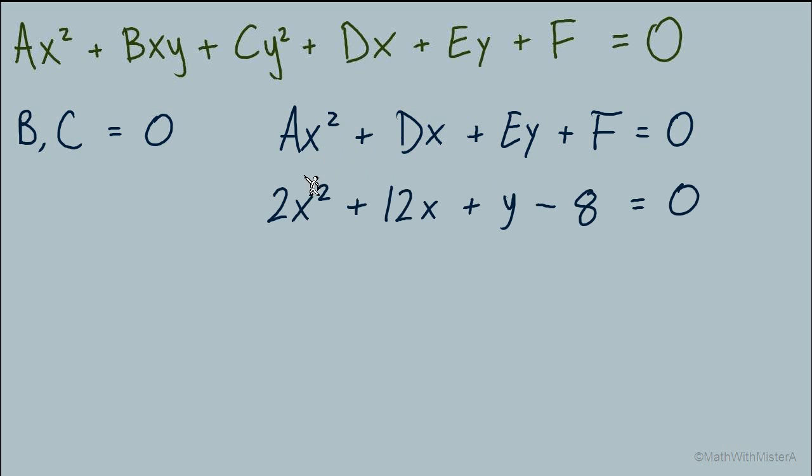So let's throw in some numbers for an example: 2x² + 12x + y - 8 = 0. I know that completing the square is going to be a required step. So let's begin to solve this equation for y and complete the square for x.